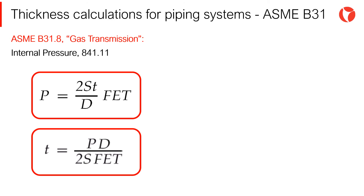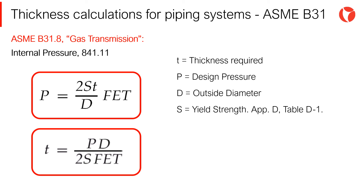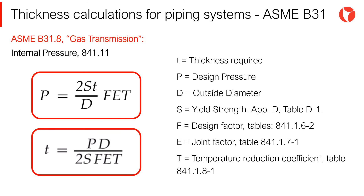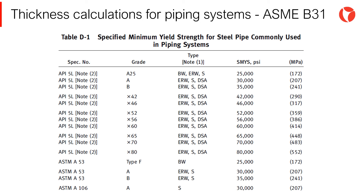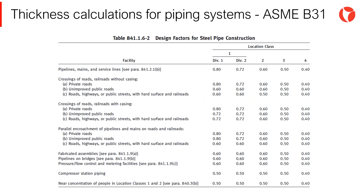In accordance with the ASME B31.8 code, the thickness required for straight sections of pipes under internal pressure is given by the following equation, where the required thickness T is obtained with the variables: P, design pressure; D, outside diameter; S, yield strength; F, design factor; E, joint factor; and T, temperature reduction coefficient. The table shown on the screen lists the different piping materials and their corresponding mechanical properties. In this case, the yield strength of the materials is listed so that, by applying the aforementioned coefficients, the allowable stress of the materials is obtained. The design factor F reduces the allowable stress due to service conditions and the location of the system, and working the table with the location and service of the system, the design factor F is obtained.